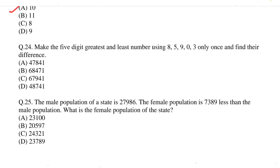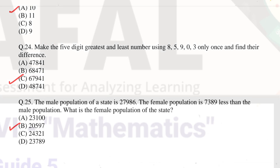Question 24: make the greatest and least 5-digit numbers using 8, 5, 9, 0, 3 only once and find their difference. The correct option is option C, 67941. Question 25: the male population of a state is 27,986. The female population is 7,839 less than the male population. What is the female population of the state? The correct option is option B, 20,597.